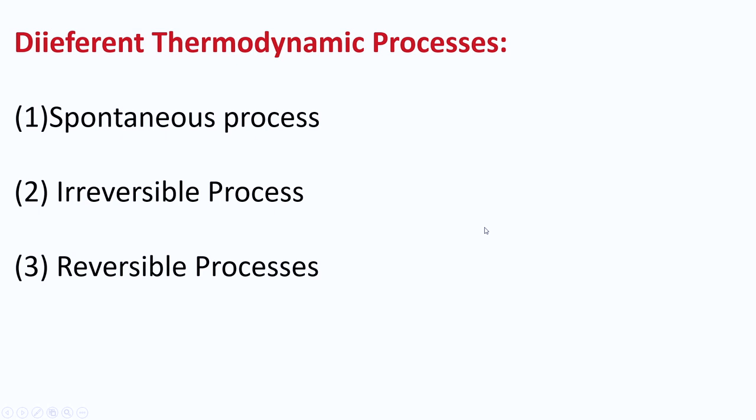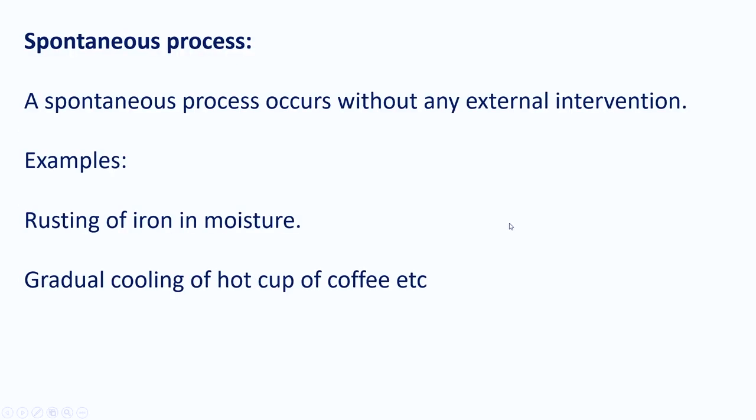Let us look at different thermodynamic processes: spontaneous, irreversible, and reversible. A spontaneous process occurs without any external intervention — it happens on its own. For example, if you leave a piece of iron in open air, it gradually gathers rust without any action by us. Similarly, the gradual cooling of a hot cup of coffee left in a room until it attains room temperature is a spontaneous process.